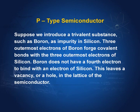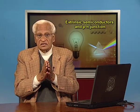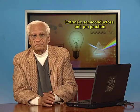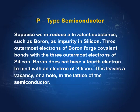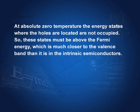Suppose we introduce a trivalent substance such as boron as impurity in silicon. Three outermost electrons of boron forge covalent bonds with three outermost electrons of silicon. Remember, silicon has four outermost electrons. Three of them form bonds with the outermost electrons of this trivalent substance boron. This leaves a vacancy or a hole in the lattice of the semi-conductor. At absolute zero temperature, the energy states where the holes are located are not occupied, so these states must be above the Fermi energy, which is much closer to the valence band than in intrinsic semi-conductors.